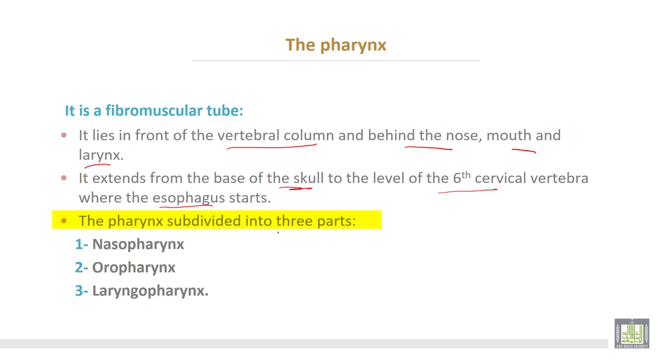The pharynx is subdivided into three parts: number one, nasopharynx; number two, oropharynx; number three, laryngopharynx.